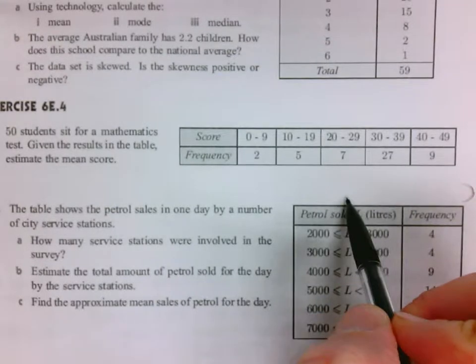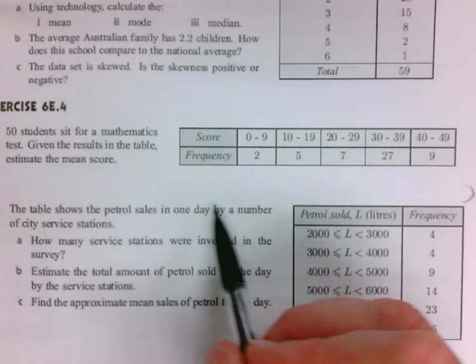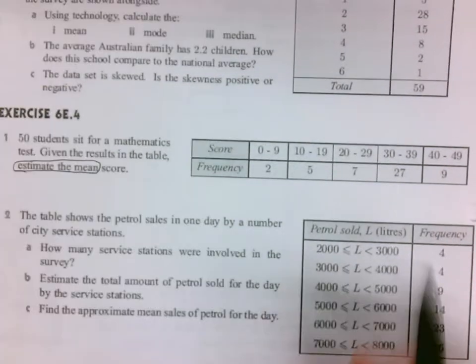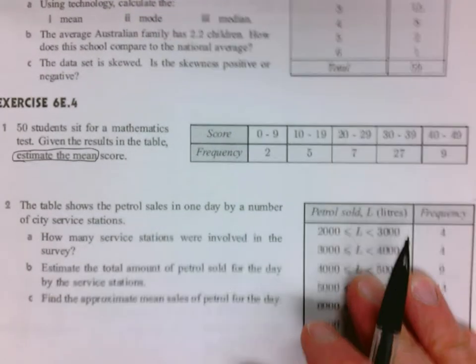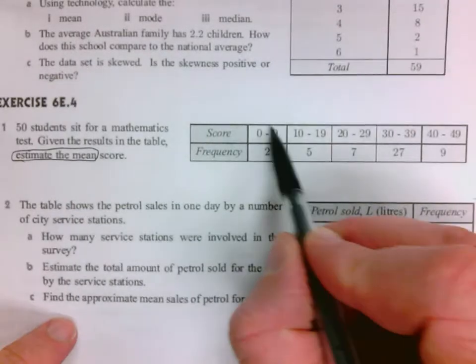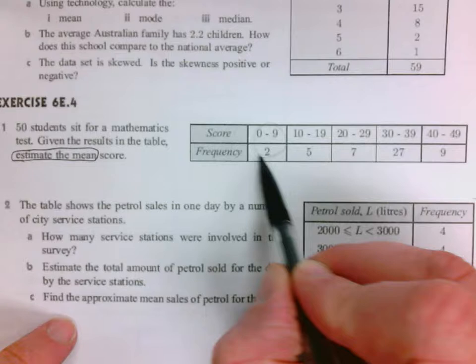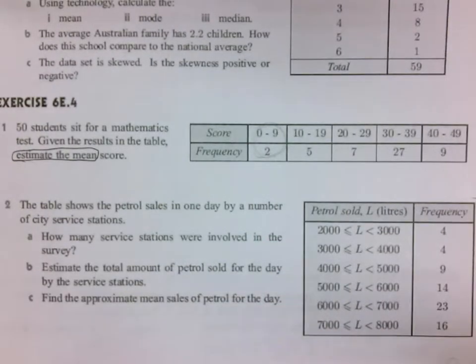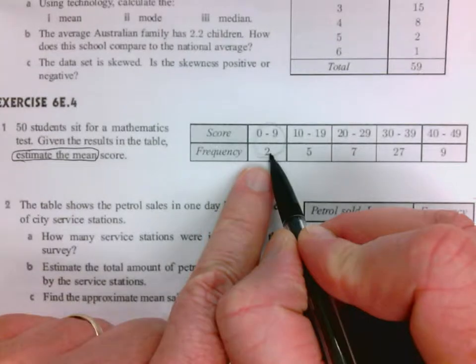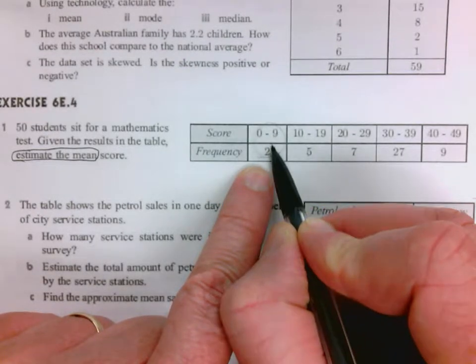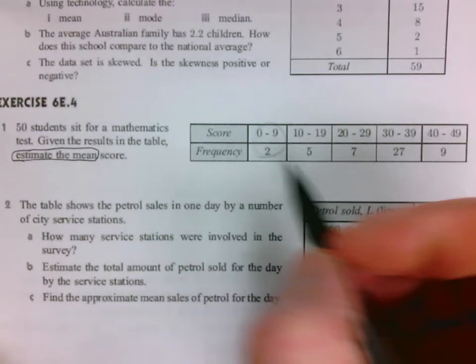So we have this in a frequency table already. We don't know the individual values. We could make a bar graph really fast—we have the summarized table. But sometimes in that summarized table they ask you to estimate the mean. When you estimate the mean, you need to find the midpoint of each interval.